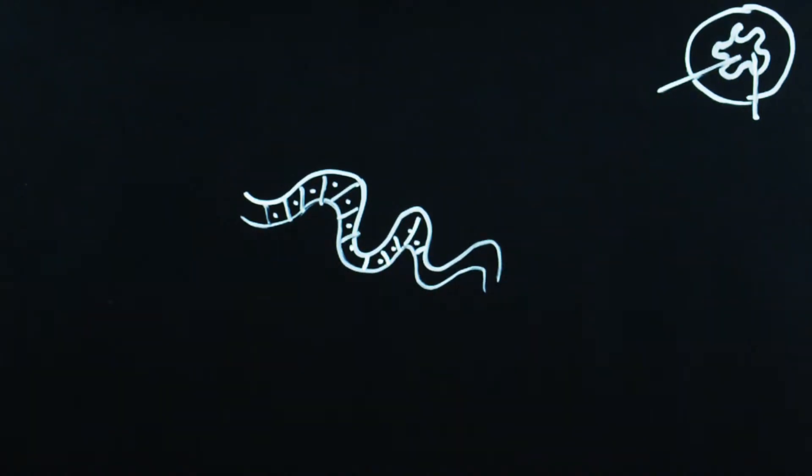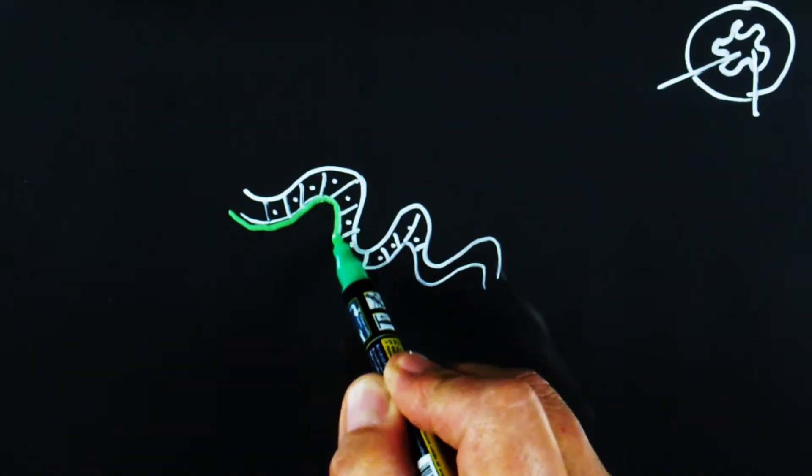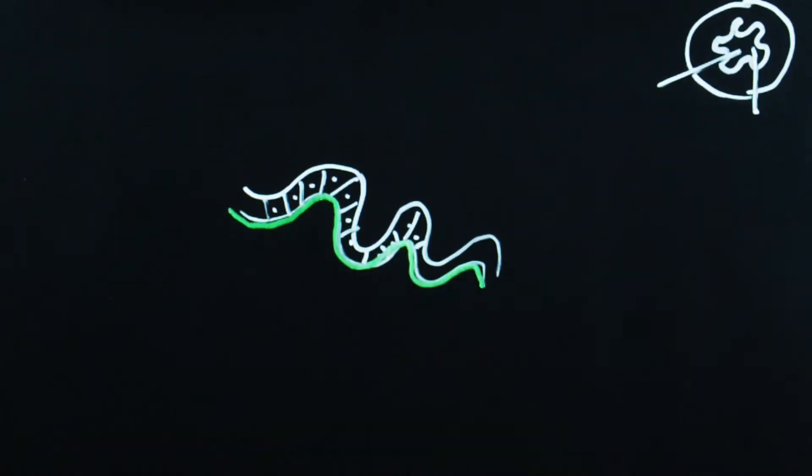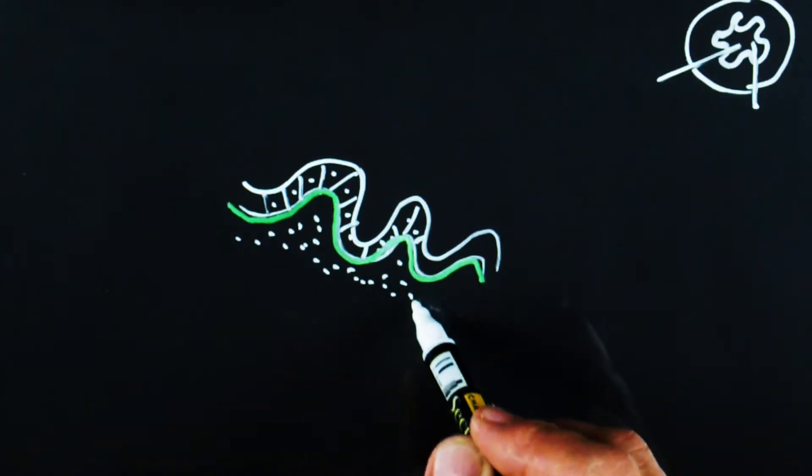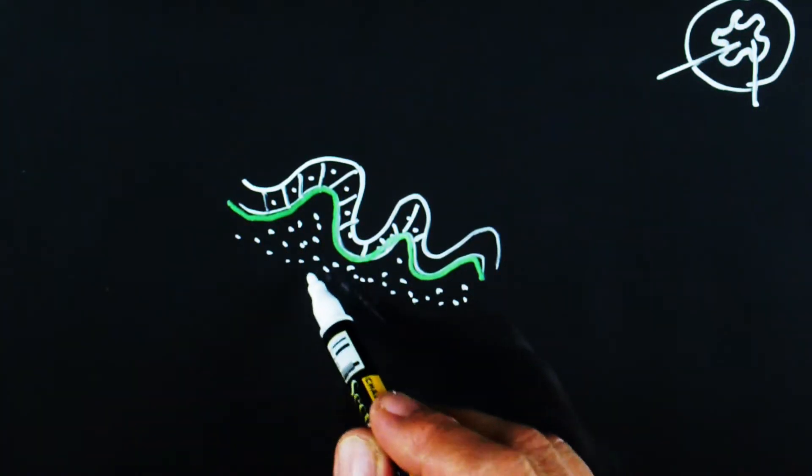This epithelium sits on a basement membrane. The supporting connective tissue is referred to as lamina propria. This is a very loose connective tissue layer, including lymphocytes and small capillary vessels.